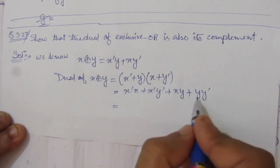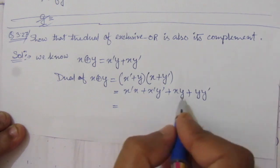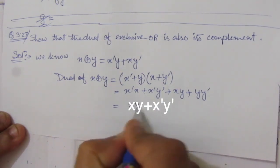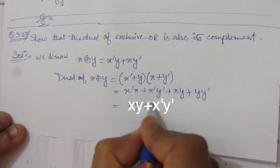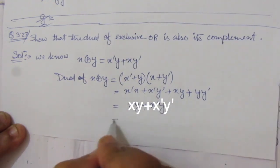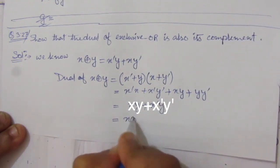So this is 0. This last term is also 0. So we have xy plus x bar y bar. This is nothing but x XNOR y.